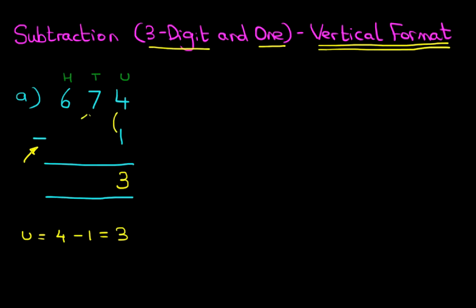Now we'll do the tens. We've got 7 tens but we've got 0 here. 7 minus 0 is 7. As for the hundreds, we've got 6 hundreds minus 0. So 6 minus 0 is 6. And that is our answer. 674 minus 1 is 673.